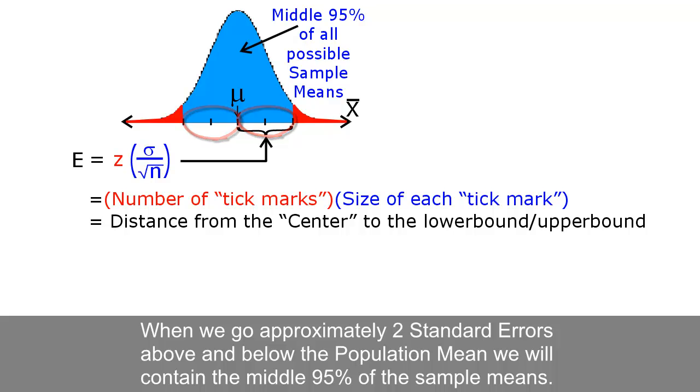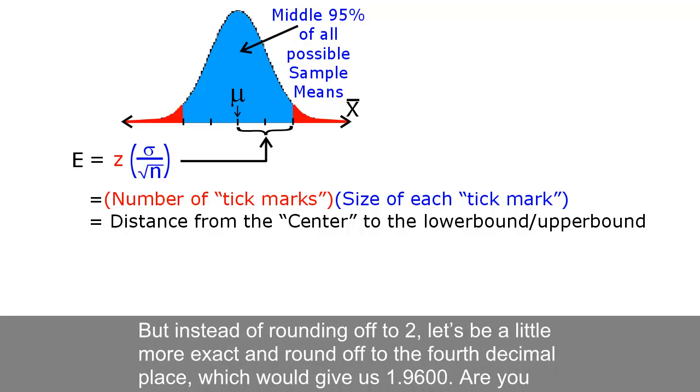When we go approximately 2 standard errors above and below the population mean, we will contain the middle 95% of the sample means. But instead of rounding off to 2, let's be a little more exact and round off to the 4th decimal place, which would give us 1.9600.